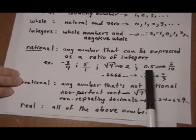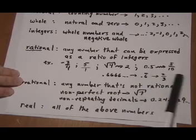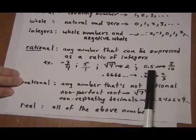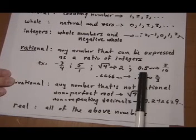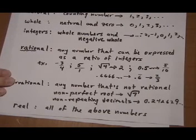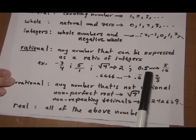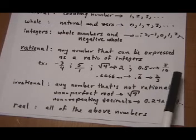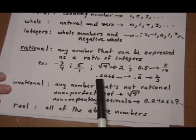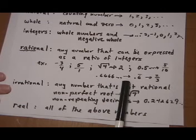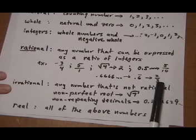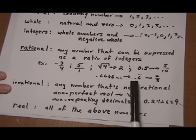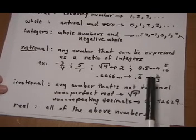For decimals, any decimal that ends or has all zeros to the right can be written as a ratio of integers. For example, 0.5 is 5 tenths, so that would be 5 over 10. So any decimal that ends can be written like that. Also, any decimal that repeats forever can be written as a ratio of integers. For example, 0.6666 going forever — which is 0.6 repeating — is two-thirds. So any decimal with a repeating pattern is a rational number.